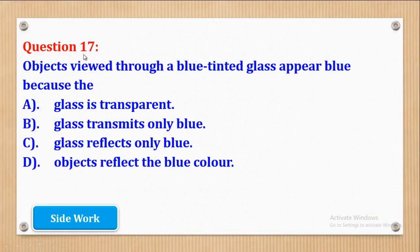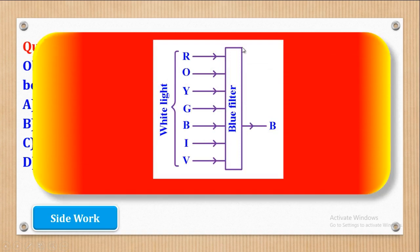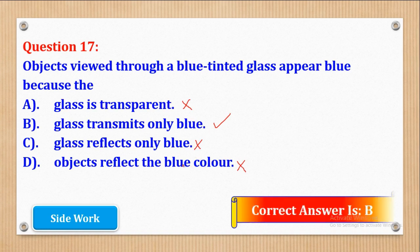Question 17: objects viewed through a blue tinted glass appear blue because — Part A: glass is transparent. Part B: glass transmits only blue light. Part C: glass reflects only blue light. Part D: objects reflect the blue color. The blue tinted glass acts as a blue filter — when white light falls on it, all other colors are absorbed and only blue is transmitted. Glass is transparent is not okay because blue tinted glass is translucent. The correct answer is part B.